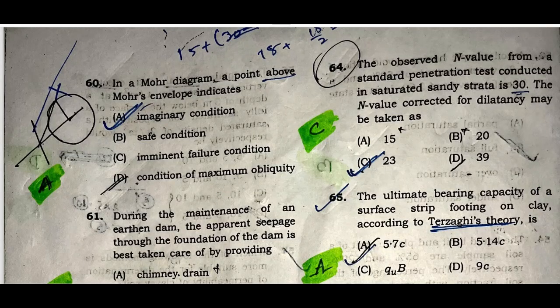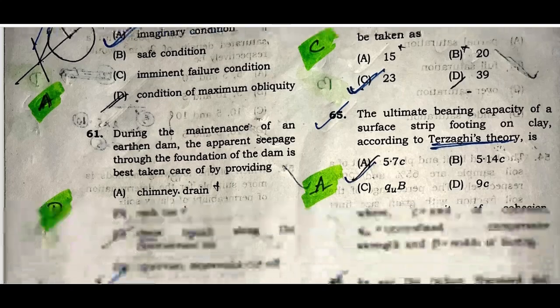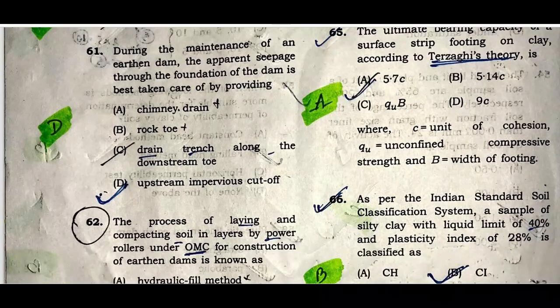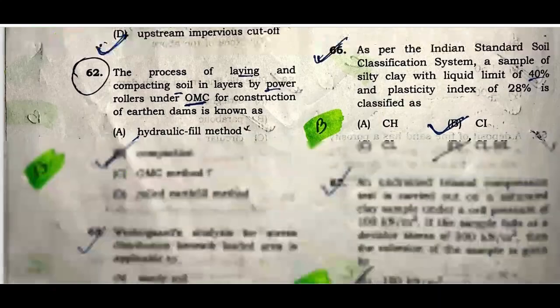Question sixty: In a Mohr circle diagram, a point above Mohr's envelope indicates an imaginary condition. Option A is the correct answer — imaginary condition. Question sixty-one: During the maintenance of an earthen dam, seepage through the foundation of the dam is best taken care of by providing an upstream impervious cut-off. Option D is correct.